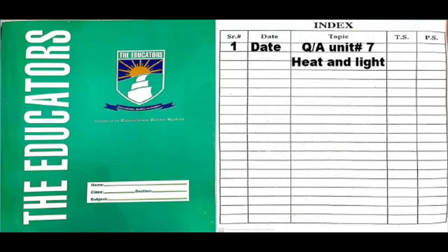Dear students, before starting our notebook work, we will write index. In serial number box, we will write 10, next write date and next write topic. Our topic is question answers, unit number 10, our earth.